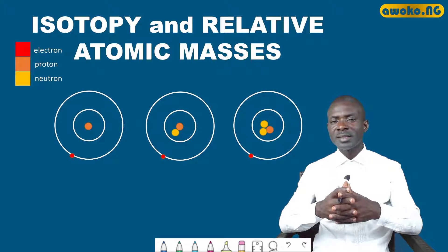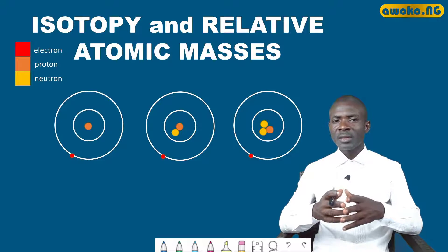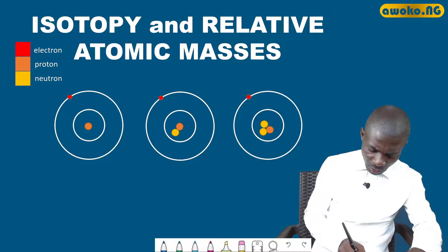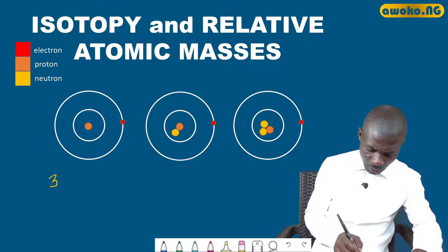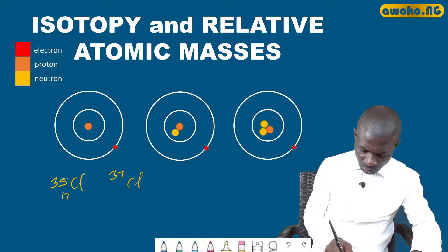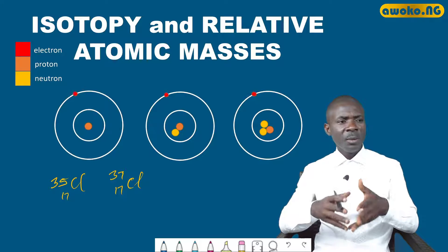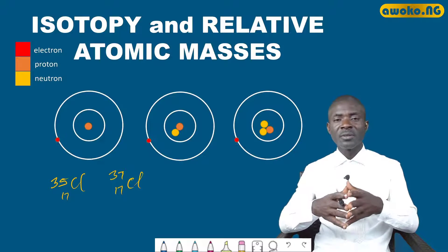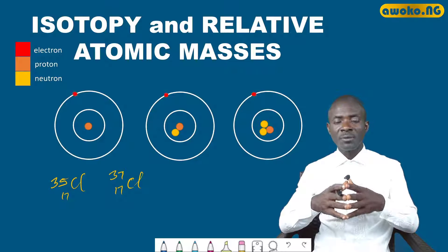A common example of an element that exists as isotopes is chlorine, with two possible isotopes: ³⁵Cl and ³⁷Cl. The atomic number (number of protons) is the same at 17, while the mass number differs based on the number of neutrons.